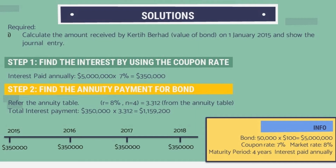Next, we find the annuity payment for the bond by referring to the annuity table at 9% interest rate. From the annuity table, the factor is 3.312. So the total interest payment until the maturity date is $1,159,200.